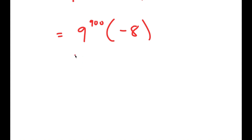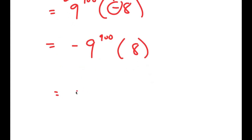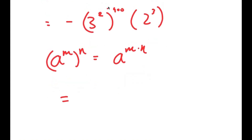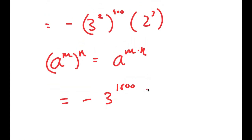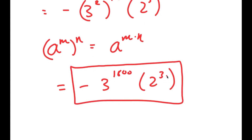We can't get the exact value because 9^900 is such a big number, but we can get the simplified form. I'm going to move the negative sign to the front to get negative 9^900 times 8. Since 9 = 3^2 and 8 = 2^3, this becomes negative 3^2 to the power of 900 times 2^3. Using the property (a^m)^n = a^(m·n), I get negative 3^1800 times 2^3 as my final solution.